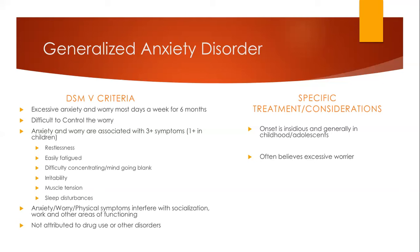Those symptoms include restlessness, easily fatigued, difficulty concentrating or mind going blank, irritability, muscle tension, and sleep disturbances. A lot of times anxiety or worry or physical symptoms of anxiety can interfere with socialization, work functioning, and other areas. The individual may feel frustrated or disgusted with their life or themselves, so they may feel hopeless. They may remember a time when they didn't feel anxious at all. They're often called chronic worriers.